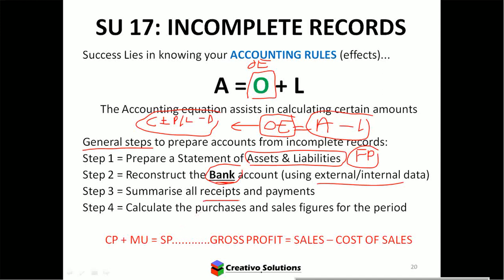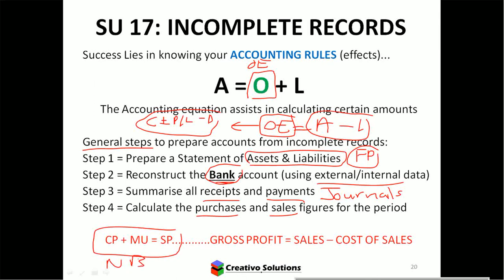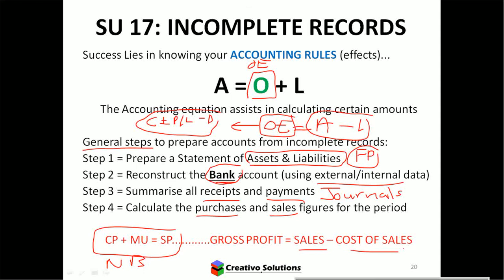If you want to look at receipts and payments, you would look at journals — there could be a missing figure in the journals, and the journals will help you complete your records. You can also look at purchases and sales. If you buy something, you're going to sell it at a profit, so if you know the markup, you can work out the missing cost or the missing selling price. Gross profit is also sales minus cost of sales.